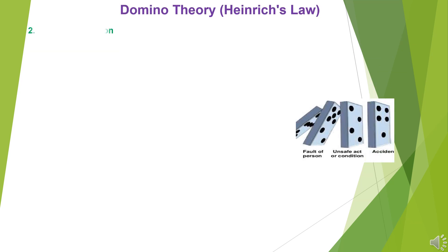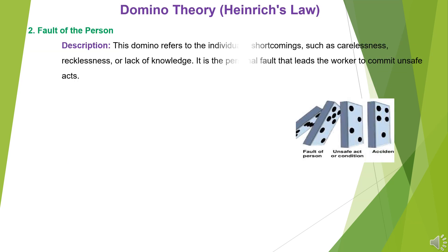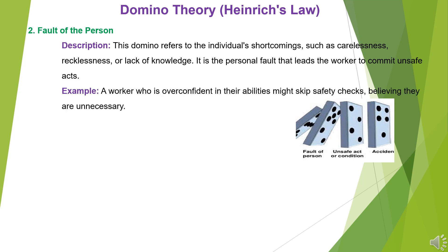Domino 2 — Fault of the Person: This domino refers to the individual's shortcomings, such as carelessness, recklessness, or lack of knowledge. It is the personal fault that leads the worker to commit unsafe acts. Example: A worker who is overconfident in their abilities might skip safety checks, believing they are unnecessary.